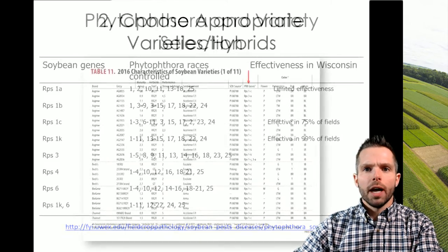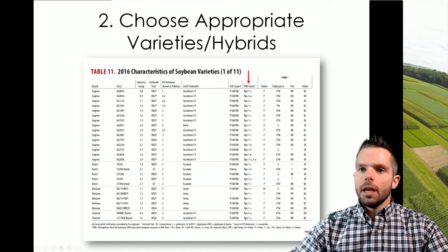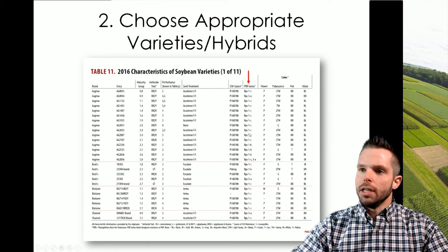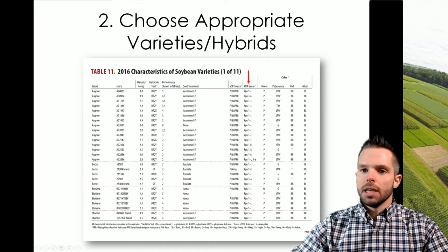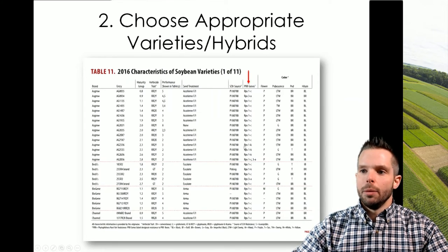Where can you find information about those genes? In table 11 in the soybean variety book from the state of Wisconsin, you can see the RPS genes are listed for Phytophthora root rot — you'll see the RPS1C and then the RPS1K genes listed depending on the varieties. Again, if you've struggled in past years, try to look for varieties that have the RPS1K gene.